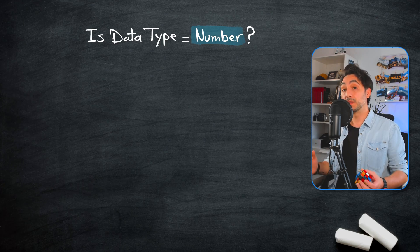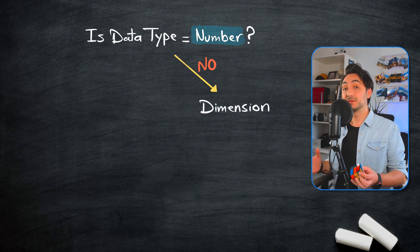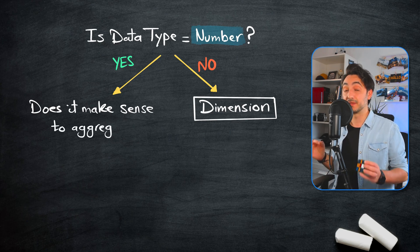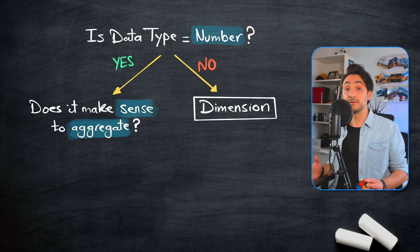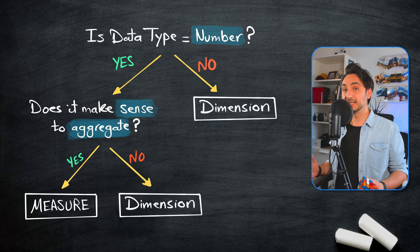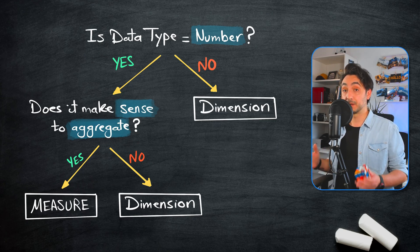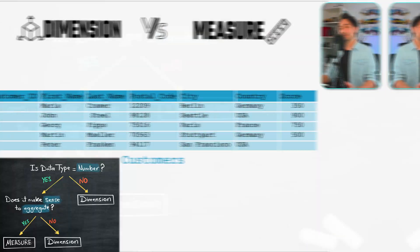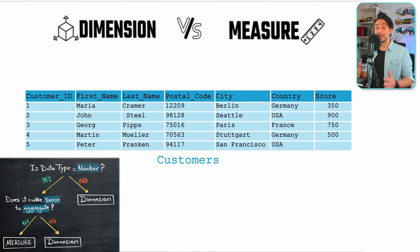This might still be confusing. Here is my decision-making process: first, check whether the field's data type is a number. If no, then it's a dimension. If yes, ask the next question: does it make sense to aggregate the values — like doing a sum or finding the average? If yes, it's a measure. If no, it's a dimension. So all non-numeric fields are dimensions, but not all numeric fields are measures.